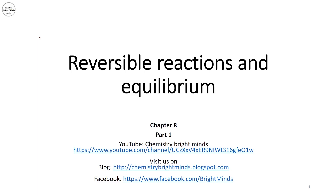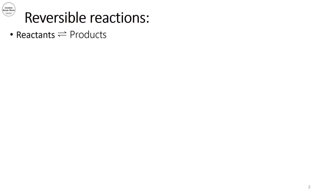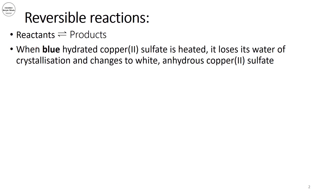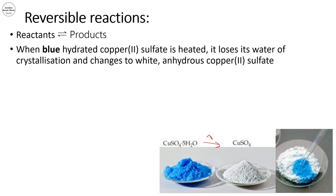Hello everyone and welcome to this video. Today we will talk about reversible reactions and equilibrium. Reversible reactions are reactions where reactants give products, and those products can reform the reactants back again. For example, the hydrated form of copper sulfate — if I heat the hydrated form, the water evaporates and I end up with the anhydrous copper sulfate form, which is white in color.